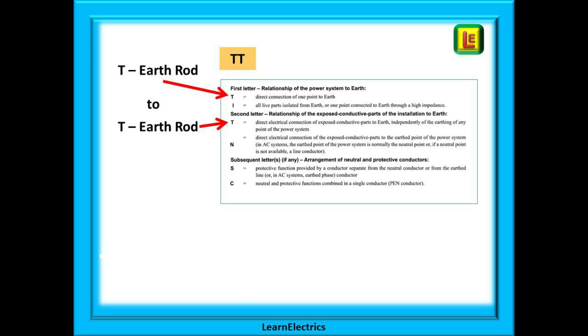And finally for us a TT system. T for earth. And again T for earth. This indicates that the earth electrode at the installation is electrically independent of the earth electrode at the supply transformer. There is no copper conductor connecting the two earths together. We must rely on a connection through the soil or ground. This is not as good an earth connection as the previous two systems which is why TT systems must be given extra consideration for safety.